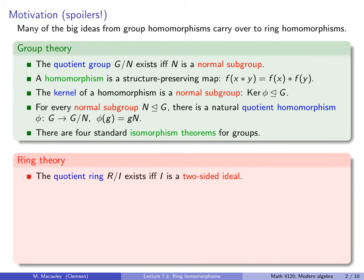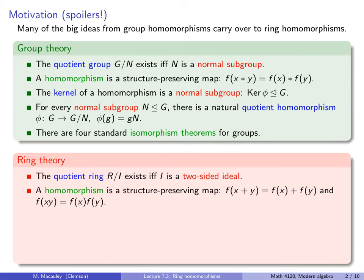Here are the analogous results for rings. In the previous lecture, we saw that we can quotient out by a subring I if and only if I is a two-sided ideal. The remaining results we will see in this lecture. Next, a homomorphism is a structure-preserving map, but now we have two binary operations, so we need both f(x+y) = f(x)+f(y) and f(xy) = f(x)·f(y) for all x and y in our ring.